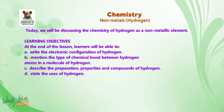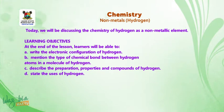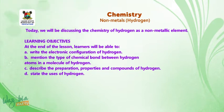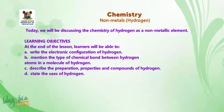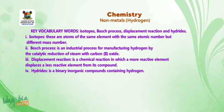Learning objectives for this lesson. At the end of the lesson, learners will be able to: A. Write the electronic configuration of hydrogen. B. Mention the type of chemical bond between hydrogen atoms in a molecule of hydrogen. C. Describe the preparation, properties and compounds of hydrogen. D. State the uses of hydrogen.